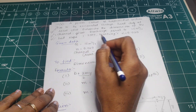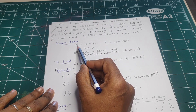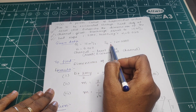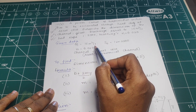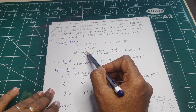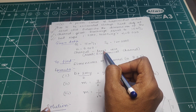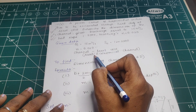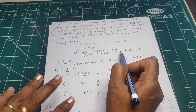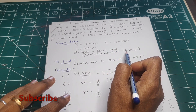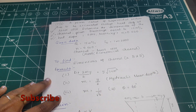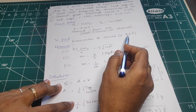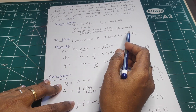Given data: Q is equal to 15 m³ per second, bed slope and Manning's constant are given. The channel is to be designed at least cost — that is, the most economical section. We need to find the dimensions of the channel, that is, breadth and depth.